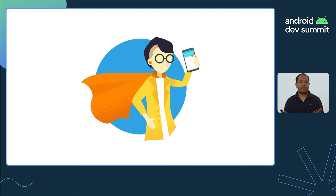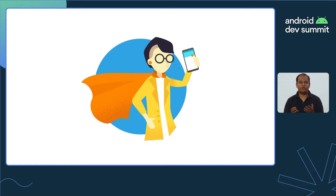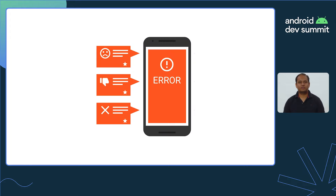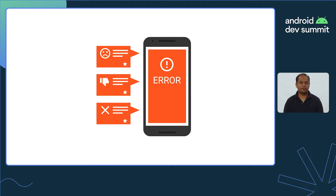High-quality apps have happier users. Happier users engage more with your app, which often results in more revenue in your app business. One of the biggest sources of app quality problems are crashes. Apps that crash a lot have higher uninstall rates as compared to apps that are running smoothly.